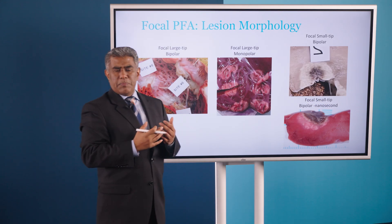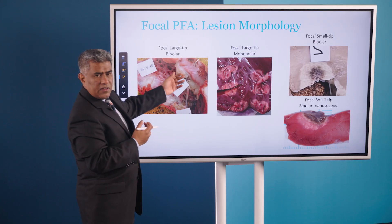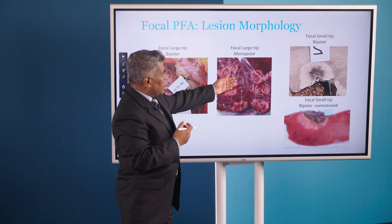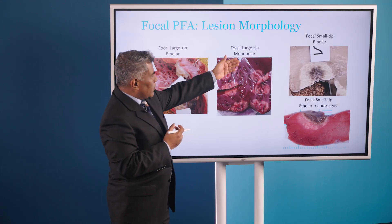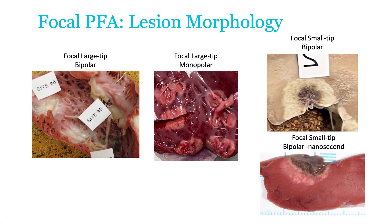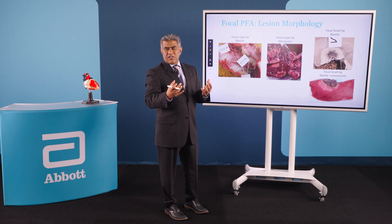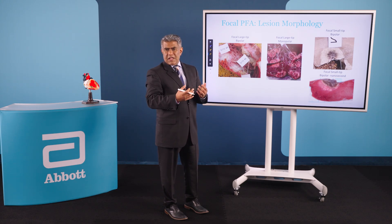These are some examples of focal PFA lesion morphologies. You have a focal large-tip bipolar lesion here, a focal large-tip monopolar lesion here, and focal small-tip bipolar and small-tip bipolar nanosecond lesions here. What you see are different shapes, different morphologies, different signatures. Some of them have a completely homogenous background, some have a hemorrhagic center. Understanding what these lesions look like and their dimensions is how you'll use this technology to make a lesion set that helps your patients.